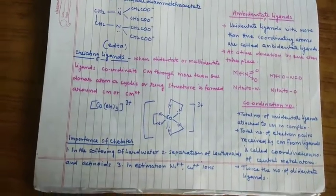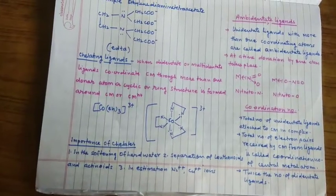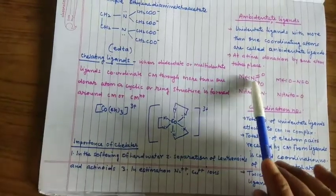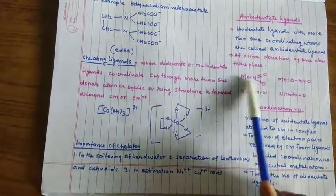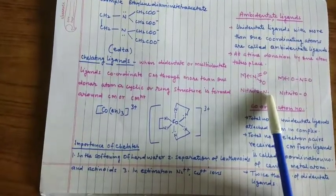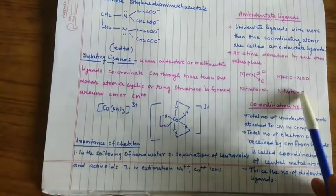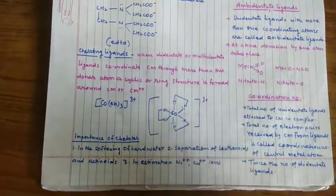For example अगर आप nitrite ion को लें तो जिसमें nitrogen के through भी donation हो सकता है, तो अगर nitrogen के through donation होगा तो उसको nitrite-N बोलते हैं capital N। और oxygen के through donation होगा तो उसको nitrite-O बोलेंगे।